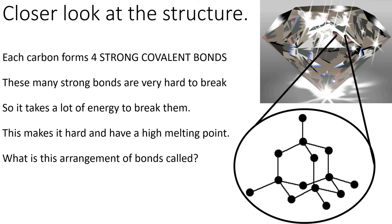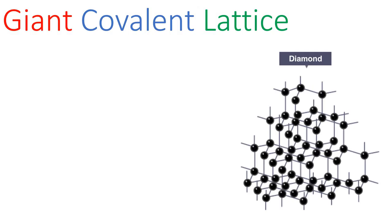Do you remember from the video what we call this arrangement where we've got four carbon atoms around a central carbon? What do we call that shape? It's tetrahedral. So all the carbons in diamond are bonded in a tetrahedral arrangement. Here is our more complex structure - if you look at all of the carbons in the middle, all of them show four bonds. So in a future slide we'll see a bigger representation showing all of our carbons having four bonds.